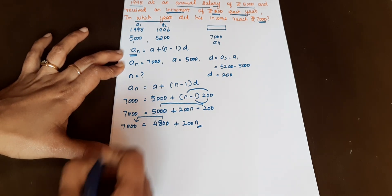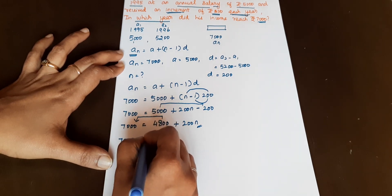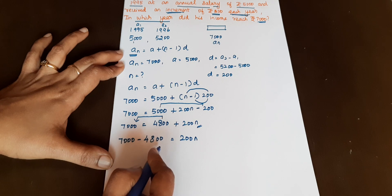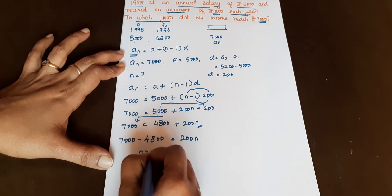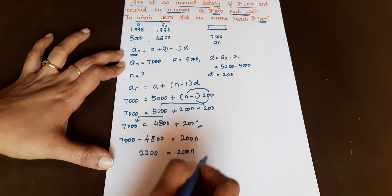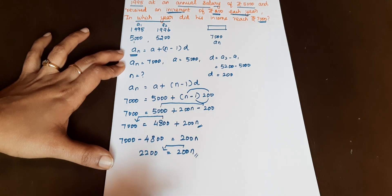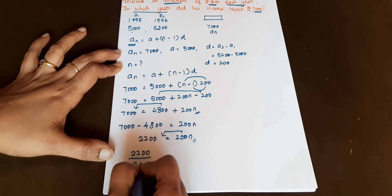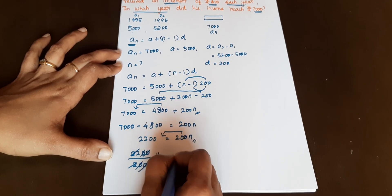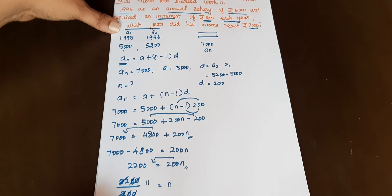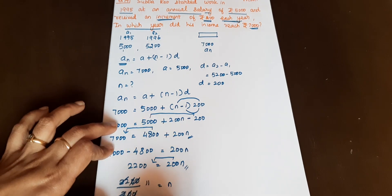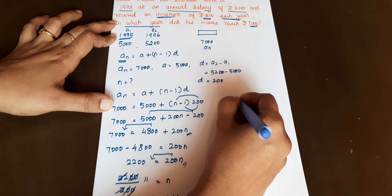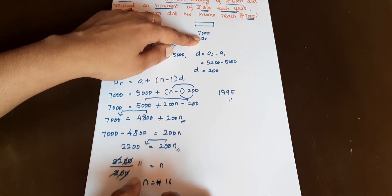Transposing: 7,000 minus 4,800 is equal to 200N. So 7,000 minus 4,800 equals 2,200, which is equal to 200N. Dividing both sides by 200: 2,200 divided by 200 equals 11. So N is equal to 11. The Nth term is 11.